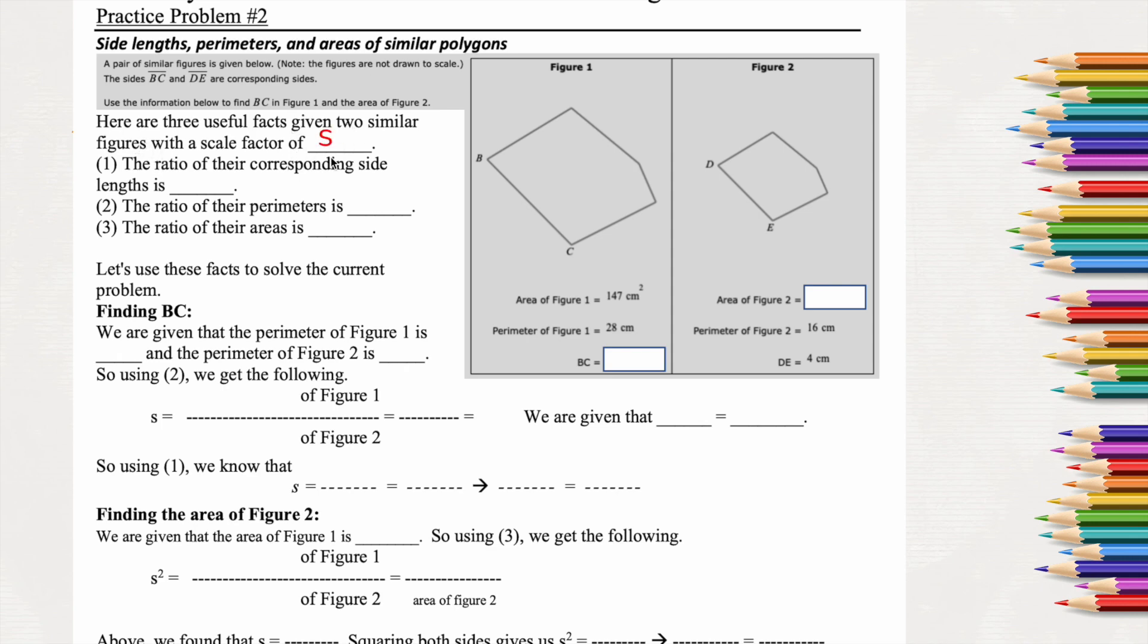So the figures have a scale factor of S, so they're going to give us a scale factor, and we'll go through and read through this. They're going to kind of give us a scale factor. We're going to have to kind of find it. So the ratio of the corresponding side lengths, any lengths that we're comparing, would be also having a scale factor of S.